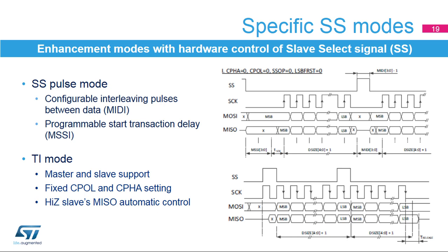The slave select signal can operate in a pulse mode where the master generates pulses on the signal between data frames. The duration of the pulses is programmable in steps of SPI clock periods. The clock phase and polarity are configurable in this mode. Another enhanced mode is the TI mode, where the data flow is synchronized by the SS pulses provided by the master on the last bit of data. The clock polarity and phase configuration is fixed and the slave data output is automatically switched into high impedance when the bus traffic stops and on a specific configurable timeout.